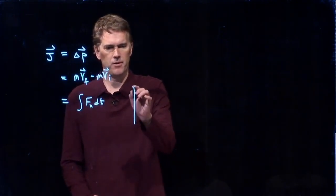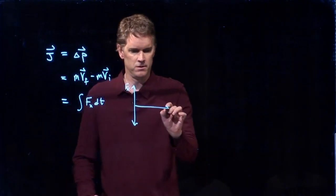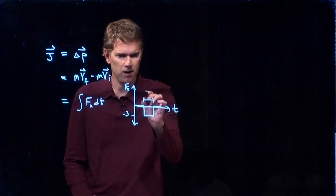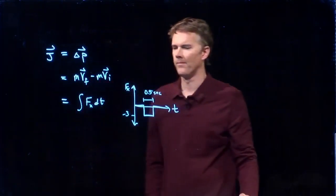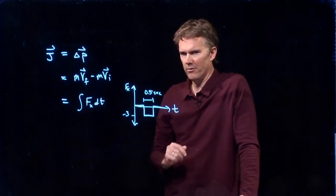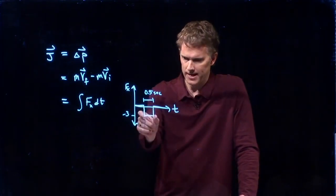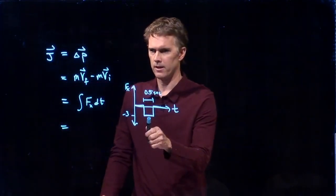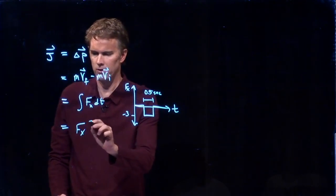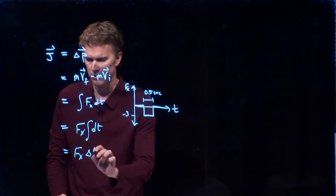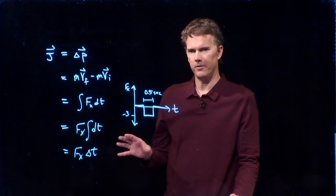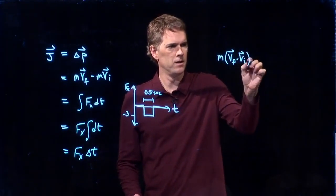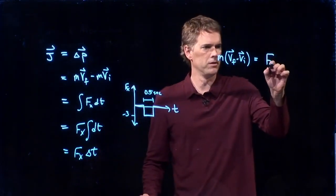Now, remember what our force diagram looked like. It was flat, dropped down to a value, and then came back up. That value was negative 3. And this time was 0.5 seconds. So if I'm doing an integral over this curve, it's 0 for the first part, then it has some value, and then it's 0 again. So the only region that I'm really worried about is the center region. And in that region, F is, in fact, constant. It has a constant value. And so this comes out of the integral, and we get F sub X times delta T. And now we should have just about all the information we need. M times VF minus VI equals F sub X delta T.